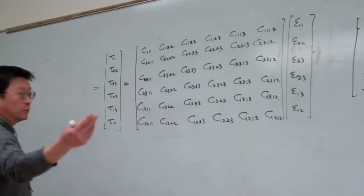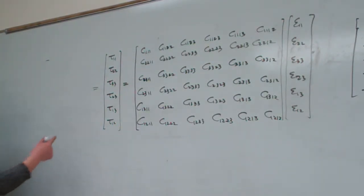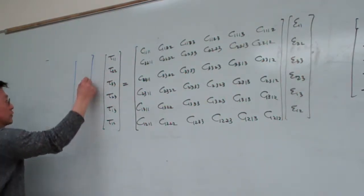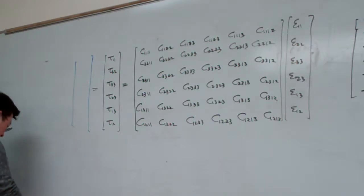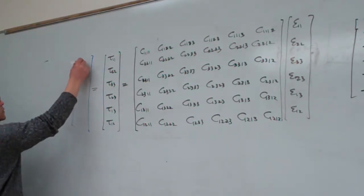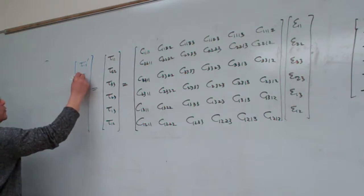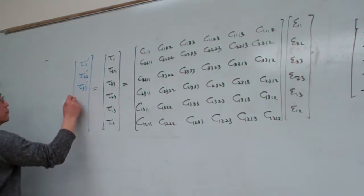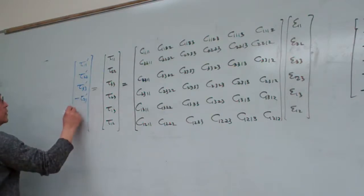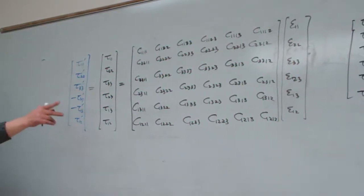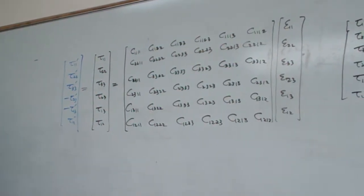Help yourself move around to here for a better look. If we convert into the new coordinate systems, that one is equal to tau 1-1 prime, 2-2 prime, 3-3 prime, and minus 2-3 prime, minus 1-3 prime, and 1-2 prime. So that is the table — I simply copy from here to here.